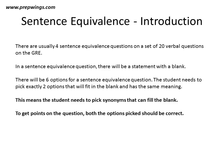This means the student needs to pick synonyms that can fill the blank. To get the points on the question, both the options picked should be correct. You can't get just one correct and one wrong and think that you get half a point — that is not possible. You have to pick both the correct options; only then will you get a point for the question.